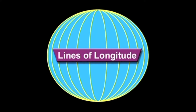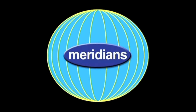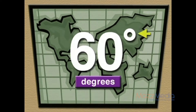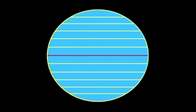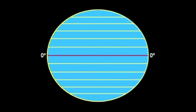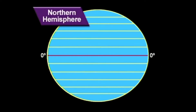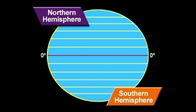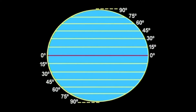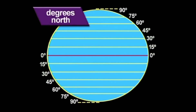Lines of longitude are also known as meridians. Latitude and longitude lines are measured in degrees — a degree is represented by a number plus the degree symbol. The line that runs around the middle of the Earth has a special name: the equator. It's located at zero degrees. Everything above the equator is called the northern hemisphere, and everything below the equator is called the southern hemisphere. The lines of latitude run from zero degrees at the equator to 90 degrees at the poles. The lines above the equator are called degrees north, and the lines below are called degrees south.